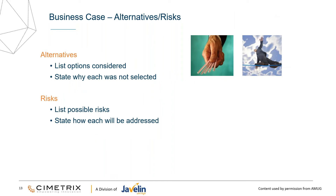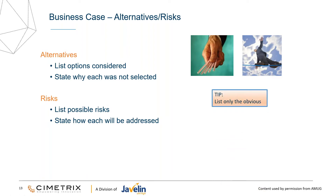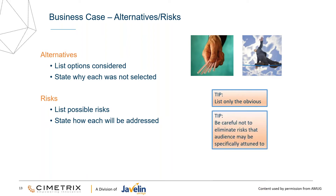Then you list your alternatives: list the options, why you considered them, why you didn't select them, list the possible risks and state how they're going to be addressed. You want to only list the obvious options — you don't want to state every risk under the sun. Engineers can be very cautious and may list 25 or 30 items that may not really happen. But be very careful not to eliminate risks the audience may be specifically attuned to. If you're presenting to somebody who's the safety officer of your company, you certainly better make sure you include safety as one of your items.